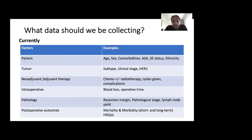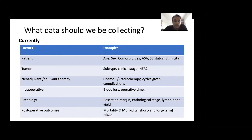However, pathology surrogates are limited for assessing surgical quality. Perhaps the thing we collect the most data around is post-operative outcomes, such as mortality and morbidity, both in the short and longer term. I'm also really pleased to see that some registries such as DUCA and the OSCA study are collecting quality of life after surgery, which I think is a really important next step for these registries.